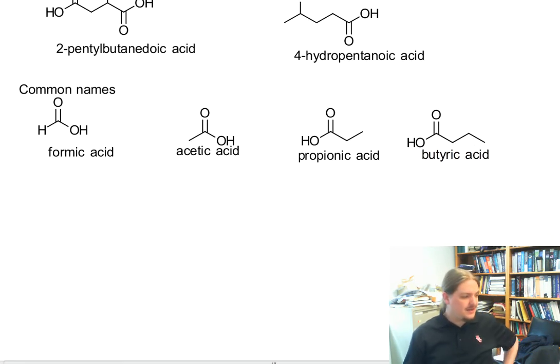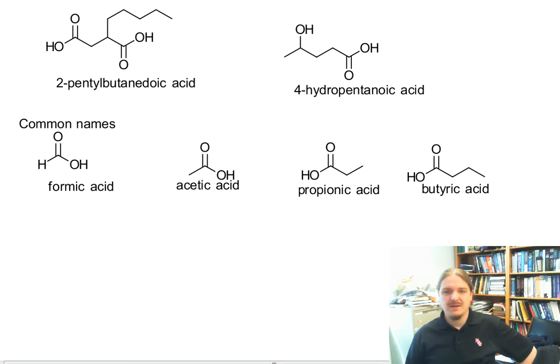Once you start getting to higher numbers, like 6 is caproic and 18 is stearic, there's just a lot of other names out there. So we have some common names that have survived.